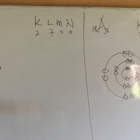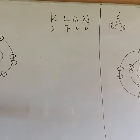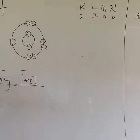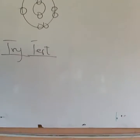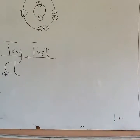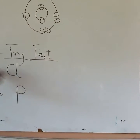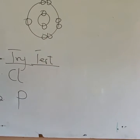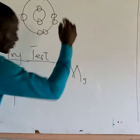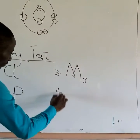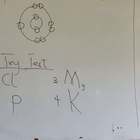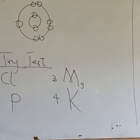Now for your trial test: draw the electronic configuration of chlorine, Cl, atomic number 17; number 2, phosphorus, P; number 3, magnesium, Mg; and number 4, potassium. You are going to draw the electronic configurations for all of these elements and submit it at the appropriate time.